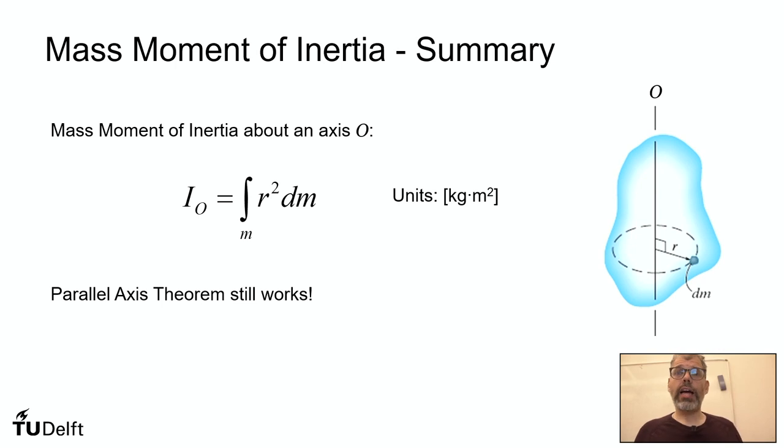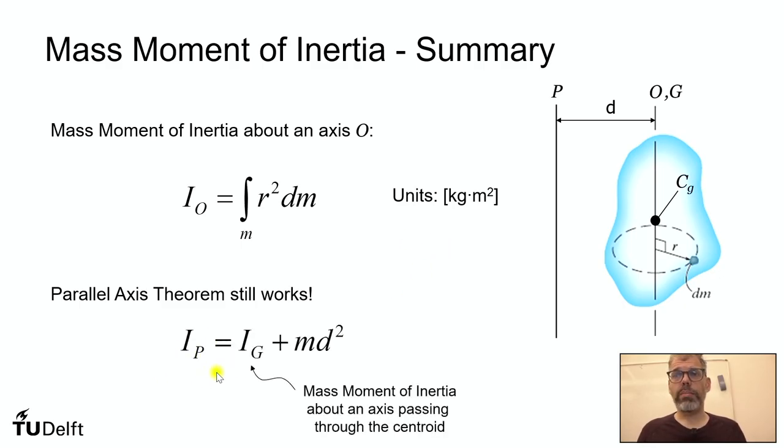And the nice thing is that actually that parallel axis theorem we've been using for moments of inertia of beams still works for a mass moment of inertia. So if we have a parallel axis P, and that original axis O is our centroidal axis, an axis passing through the center of gravity, because the parallel axis theorem only helps you translate from an axis going through the centroid to a parallel axis. So we would get the mass moment of inertia about axis P is the mass moment of inertia about the centroidal axis, plus mass times distance squared. So the only difference here is, instead of it being area for the area moment of inertia, it's mass for the mass moment of inertia. So we can use this to conveniently transform a mass moment of inertia to a parallel axis.